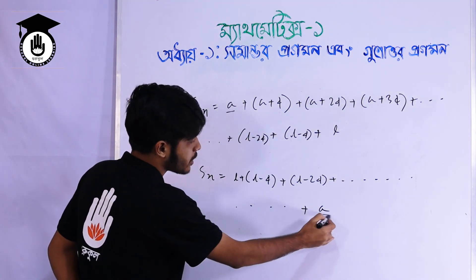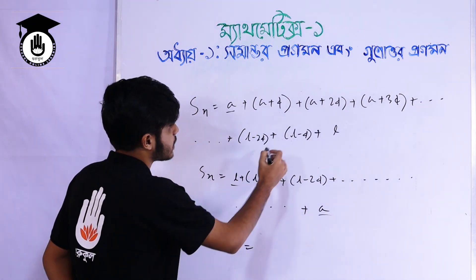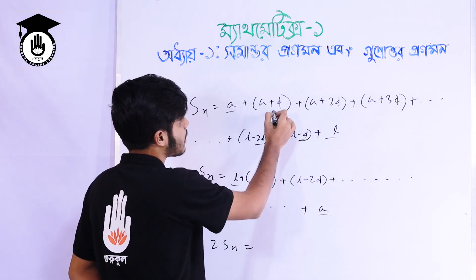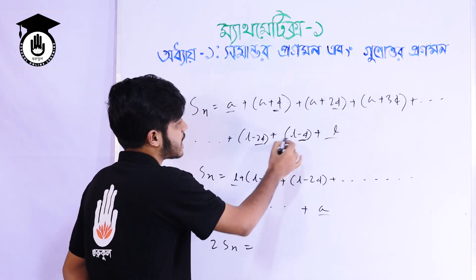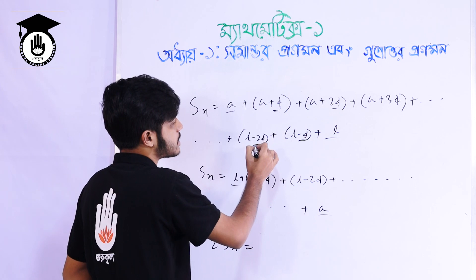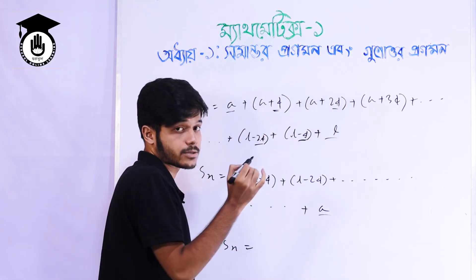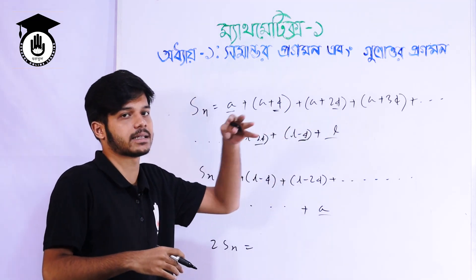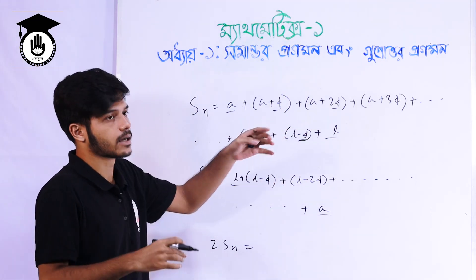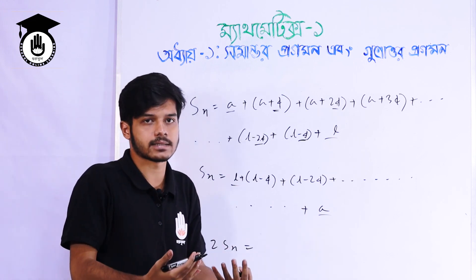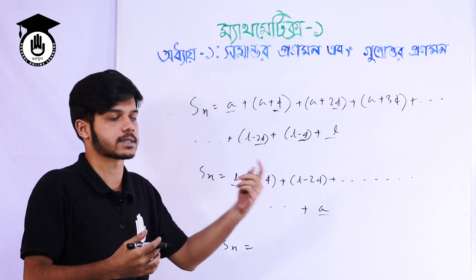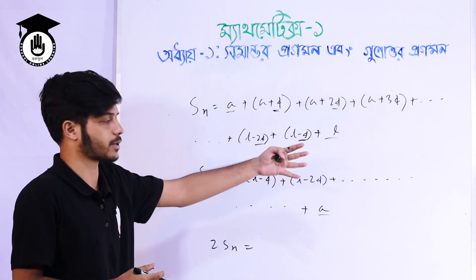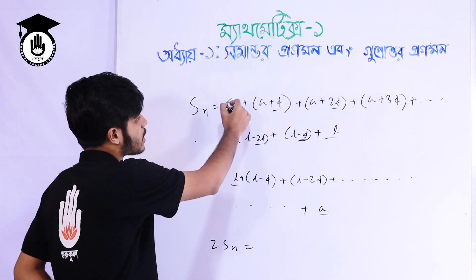A is 1, L is 1, and D is 1. This is minus D and this is plus D. This is minus 2d and this is plus 2d. So the first term is nd; if it is nd, then it is minus nd. If it is 500d, then it is minus 500d. So the first terms will cancel out — they will be cut off.